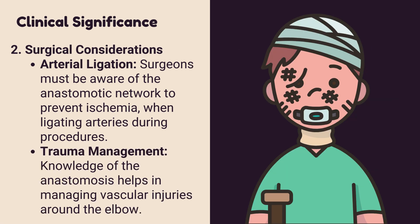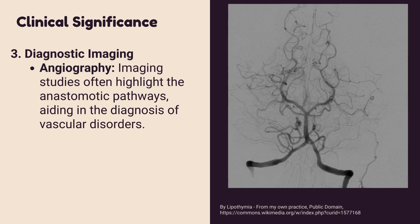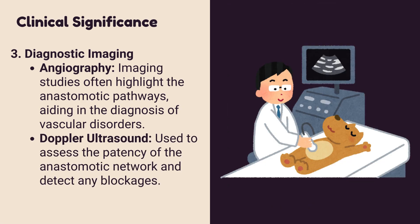Trauma management: knowledge of the anastomosis helps in managing vascular injuries around the elbow. Diagnostic imaging also benefits from this knowledge. Angiography imaging studies often highlight the anastomotic pathways, aiding in the diagnosis of vascular disorders. Doppler ultrasound is used to assess the patency of the anastomotic network and detect any blockages.